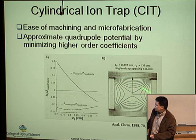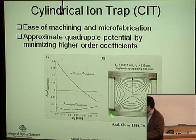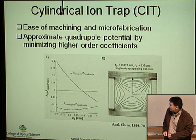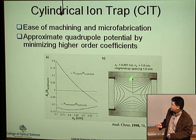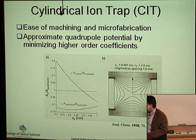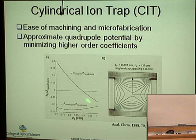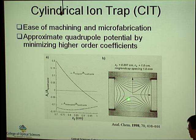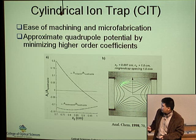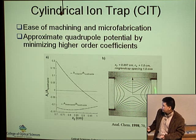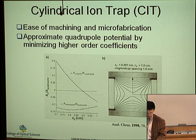It turns out that if you use a cylindrical electrode — consisting of a bottom ring, a middle ring, and a top ring — and define the dimensions such that the ratio of the Z dimension to the radius is about 0.897 to 1, then through simulation you can show that the octupole potential component is zero and the decapole potential is minimized, maximizing the quadrupole potential. This cylindrical structure is much easier to fabricate than hyperbolic electrodes.